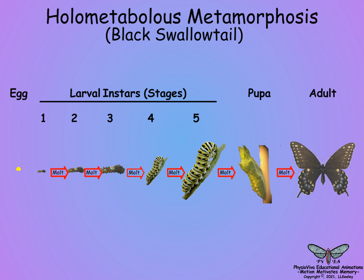It is hypothesized that holometabolus insects have three sets of genes — larval, pupal, and adult — and which set is active depends on the endocrine state of the animal. At the larval-pupal molt, the epidermal cells are reprogrammed by changes in the endocrine balance and form the immobile pupa.